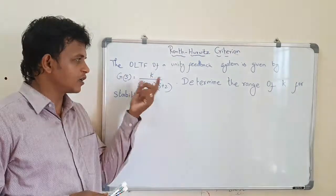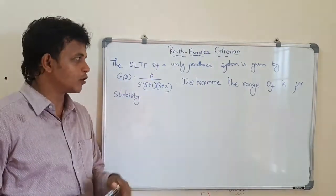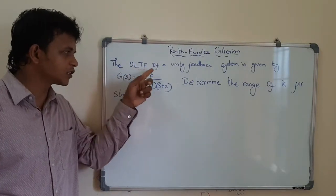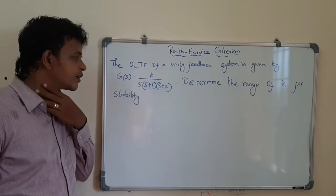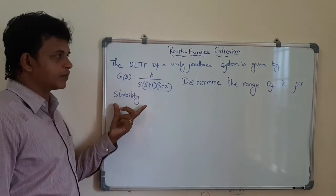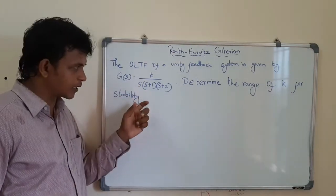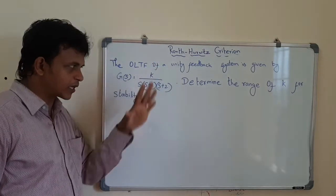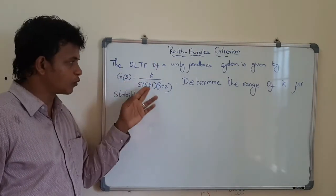We have a parameter in the transfer function. The open loop transfer function of a unity feedback system is given by G(s) equal to k divided by (s+1) into (s+2). Determine the range of k for stability. We will work with the open loop and closed loop transfer functions for this unity feedback system.